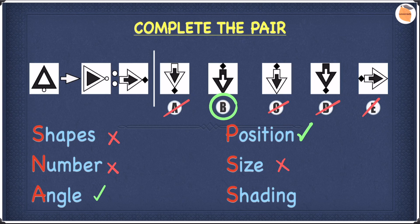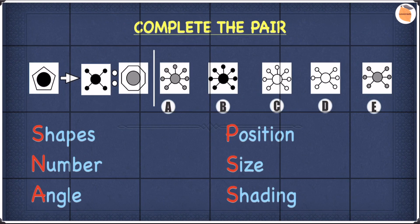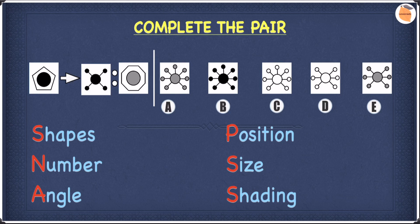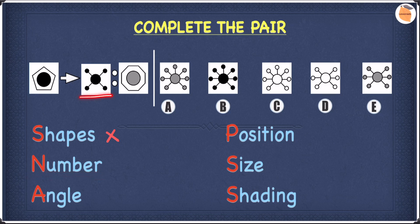I hope you guys understood everything. Let's have a look at the next example, and we're going to use SNAPS again. First, we look at shapes — we cannot find a correlation by simply looking at both shapes, so we cross shapes out. Moving on to number: we can see there is one less circle than the number of sides in the shape. Here we have a pentagon, which has five sides, and over here we have four small circles.